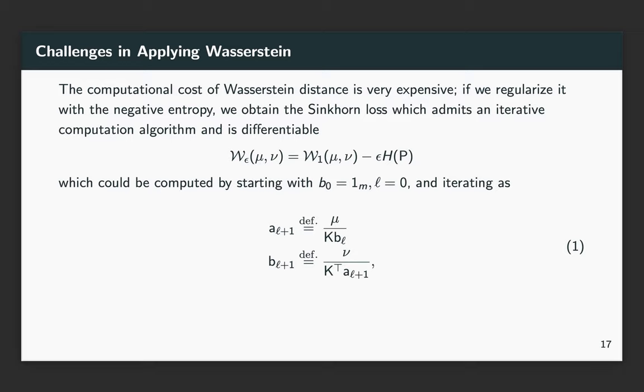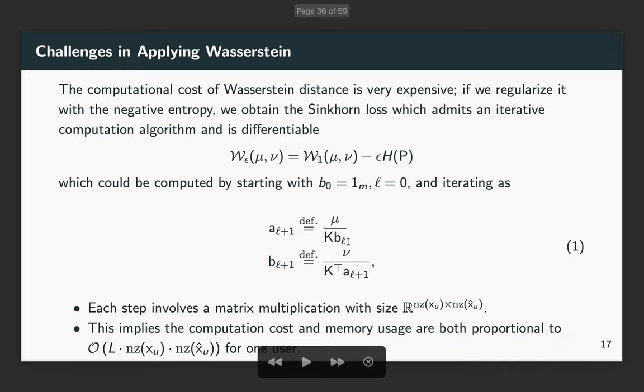However, there are some challenges in applying Wasserstein distance. The key challenge is that the computational cost of Wasserstein distance is very expensive. If we regularize it with negative entropy, we could obtain a Sinkhorn loss, which can be computed iteratively using these equations. In these iteration equations, it involves a matrix multiplication with size nz_{x_u} and nz_{x_u-hat}. Here nz denotes the number of non-zero entries in the vector.